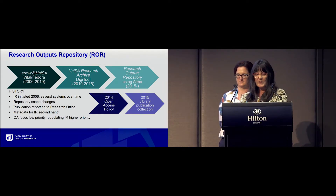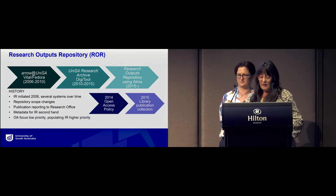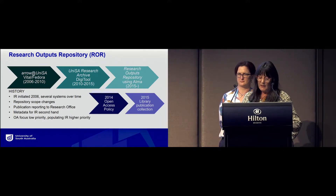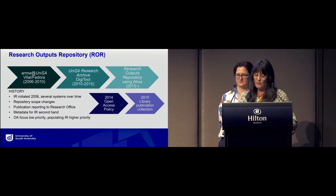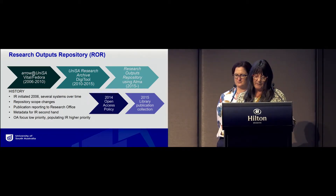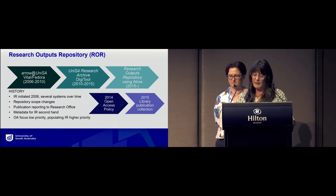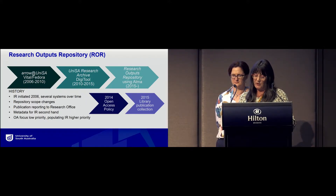Looking at the repository itself, it was established in 2006 and underwent various name changes until it was renamed the Research Outputs Repository in 2015. Each name change was also accompanied by repository software changes, so we've become quite adept at migrations. Our first repository was named Arrow at UniSA, which stood for the Australian Research Repositories Open to the World, formed out of federal government funding to build Australia's institutional repository infrastructure. The repository was renamed in 2010 to the UniSA Research Archive, at which point the scope changed to include not only research outputs but also special archival collections.